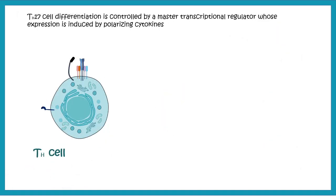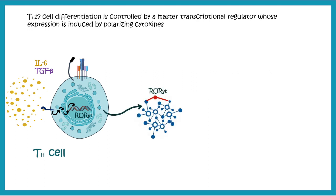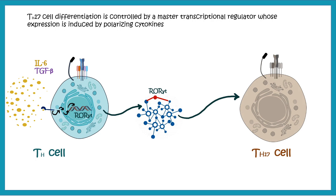TH17 cell differentiation is controlled by several master regulators. The most important of them is ROR gamma T. Whenever IL-6 or TGF-beta is bound to the specific receptors on the T helper cell, they lead to signaling that ultimately expresses the master regulator gene ROR gamma T. Expression of ROR gamma T leads to a specific molecular network which helps these T helper cells to differentiate into the TH17 sub-population.